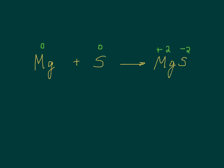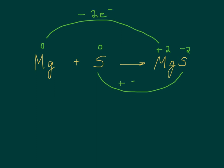You can see that magnesium went from zero to plus two, and sulfur went from zero to minus two. So magnesium has lost two electrons and sulfur has gained two electrons. Magnesium, by losing two electrons, was oxidized. Sulfur gained electrons, so sulfur was reduced.